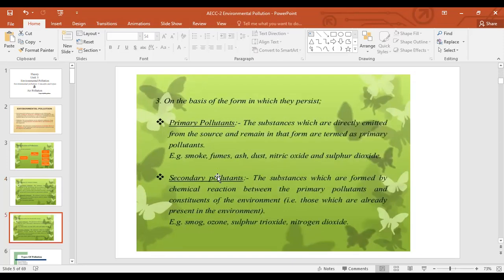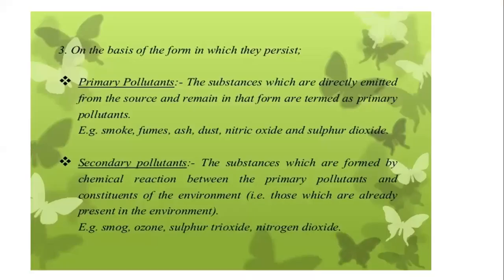On the basis of the form in which they persist, there are primary pollutants — substances which are directly emitted from the source and remain in that form — such as smoke, fumes, ash, dust, nitric oxide, and sulfur dioxide. And secondary pollutants are substances which are formed by chemical reaction between the primary pollutant and the constituents of the environment, like ozone, sulfur trioxide, and nitrogen dioxide.